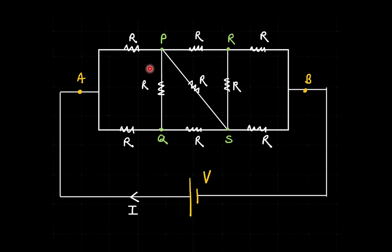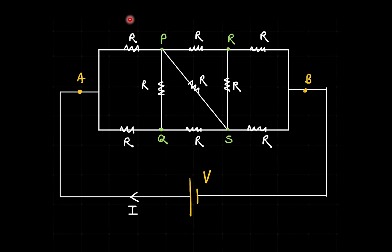Without the P-S resistor this would be a generalized Wheatstone bridge — P and Q would be at the same potential, R and S at the same potential, and no current would flow in the middle branch. Each side would carry I/2 and it would be easy to solve. But the resistor between P and S makes it challenging. Still, there is some degree of symmetry. Looking at the circuit about this diagonal line, each element has a mirror image on the other side — that is a diagonal symmetry.